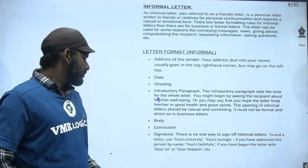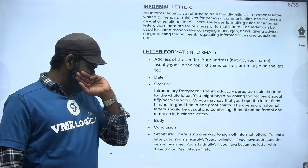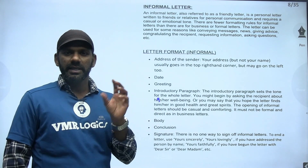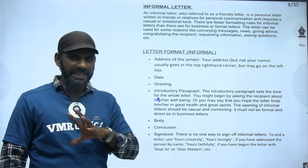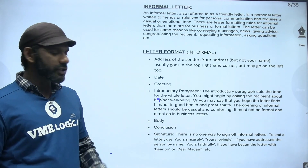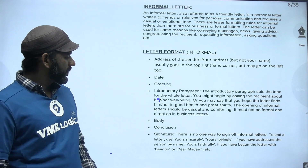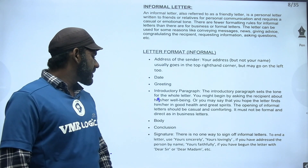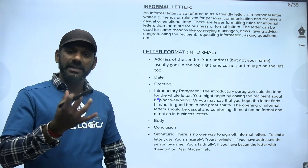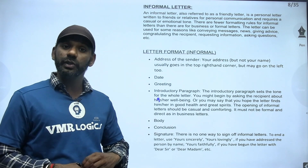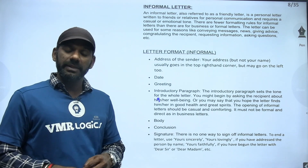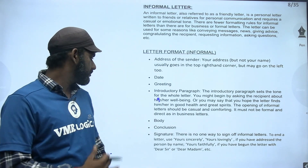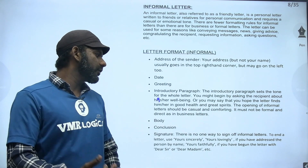Then the body — we divide the letter into three parts: introduction, body, and conclusion. In the body we can go into detail on every point. Then the conclusion. Then the signature. There is no specific way to sign off informal letters. There's no need to mention 'thank you' in an informal letter — that is required in a formal letter, not an informal one.